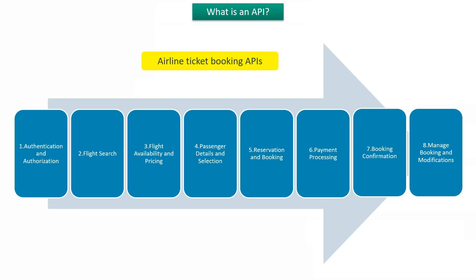The first one is the authentication and authorization related API. The second one is the flight search related API. The third one is the flight availability and pricing API. The fourth one is the passenger details and selection API. The fifth one is the reservation and booking API. The sixth one is payment processing related API. The seventh one is booking confirmation API. And the eighth one is manage booking and modification API, like cancel or modify. Each one will be covered in detail in the next slides.